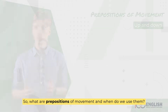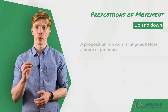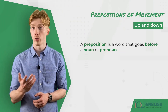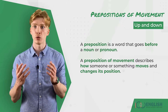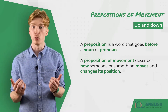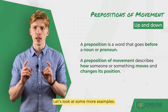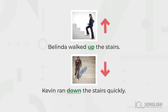We use 'down' to talk about moving to or being at a lower position. So what are prepositions of movement and when do we use them? A preposition is a word that goes before a noun or pronoun. A preposition of movement describes how someone or something moves and changes position. Let's look at some more examples. Belinda walked up the stairs. Kevin ran down the stairs quickly.